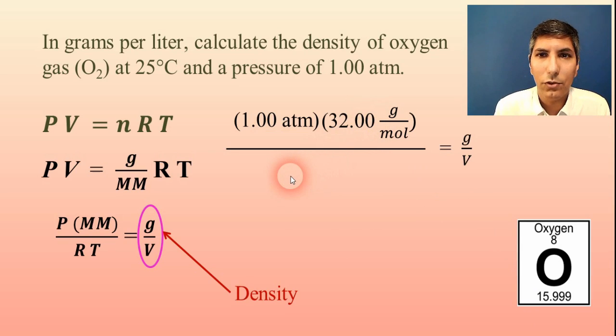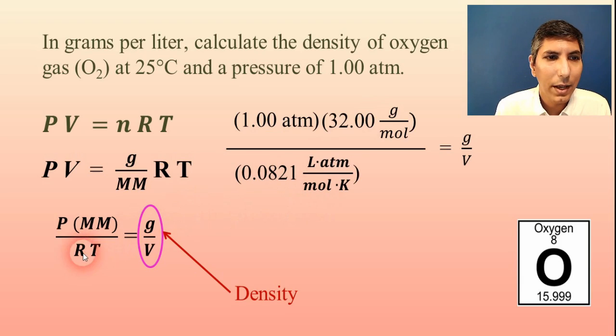Next, I have the R, which of course is still 0.0821. That hasn't changed. And my T temperature is 25 degrees Celsius. In kelvins, that's 298 kelvins. So now all I have to do is use arithmetic to solve for this.